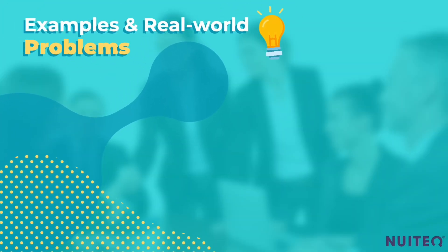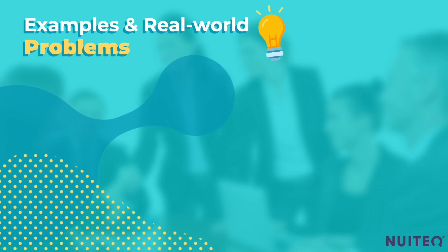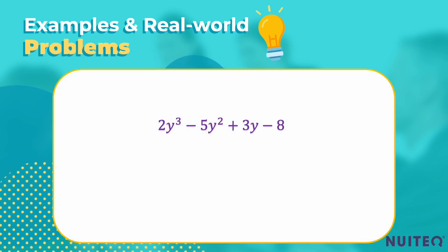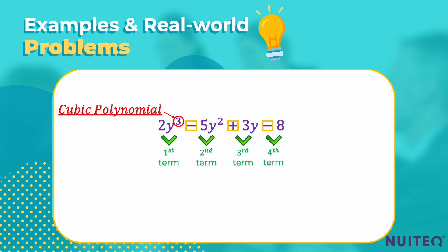Now that we've got the basics down, let's see these concepts in action with some examples and real-world problems. Let's say we have the expression 2y³ minus 5y² plus 3y minus 8. Interpret the structure of this expression. We have four terms: 2y³, negative 5y², 3y, and negative 8. The terms are connected through addition and subtraction, and this expression is a cubic polynomial because the highest power of y is 3.